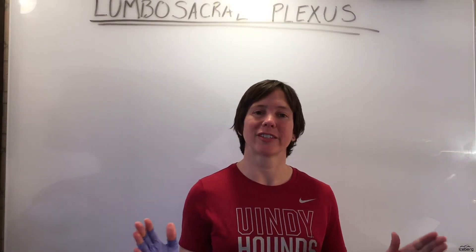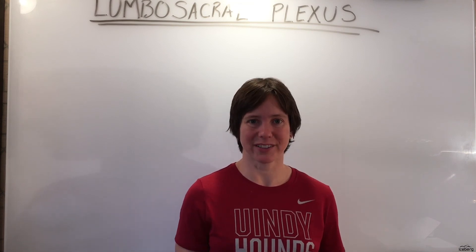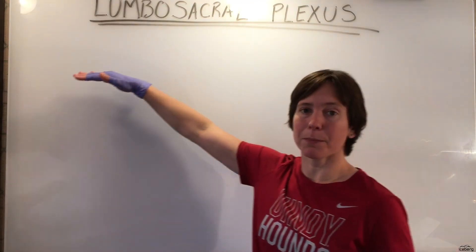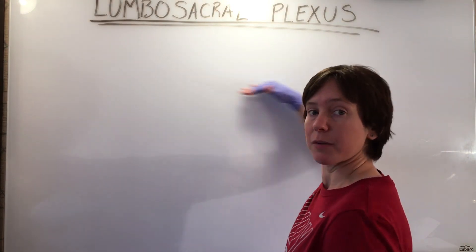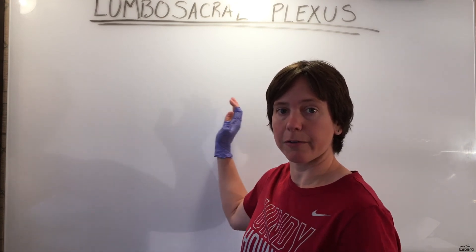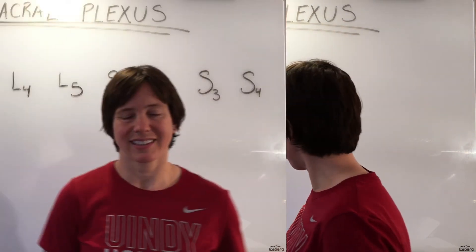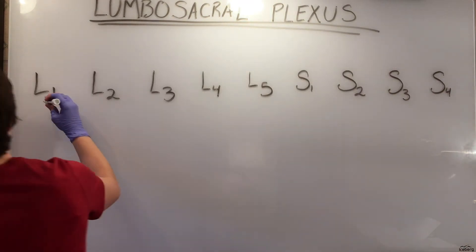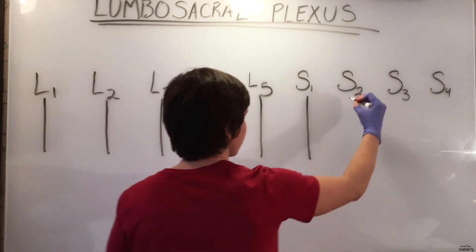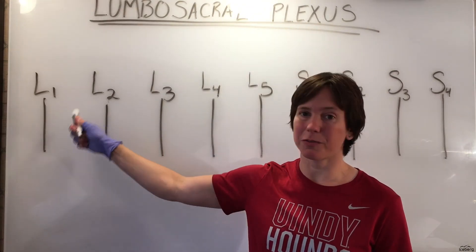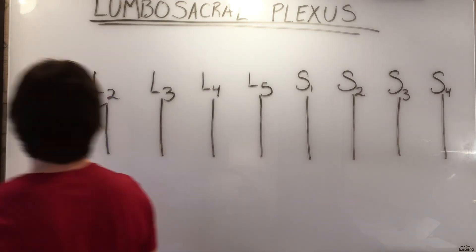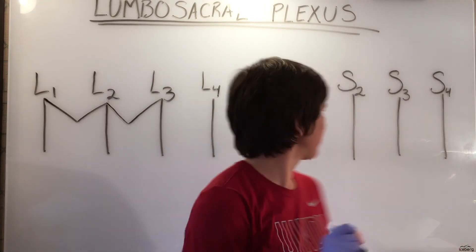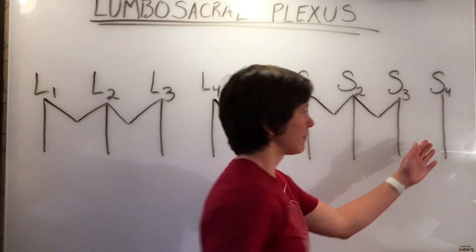Now we'll teach you how to draw a schematic diagram to help you remember the lumbosacral plexus. Get out a sheet of paper and a pen or pencil. In the upper two-thirds of your page in landscape or horizontal view, write out the root levels L1 through L5 and then S1 through S4. Draw vertical lines down from each nerve root like lines in a parking lot. Then draw a V connecting the first two roots, the second two roots, skip a space, fill them in for the rest, and skip the last space.